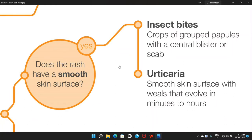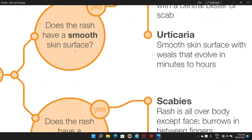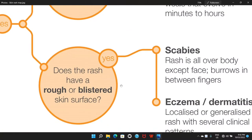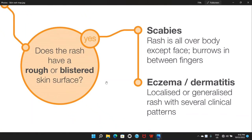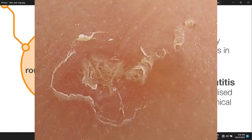Urticarial rash is very easy to diagnose. The very first question is: is it itchy? And if you look at the surface of the skin and it is very smooth, this is urticarial rash. The treatment is usually symptomatic — you can give some antihistamine medications, for example chlorpheniramine, promethazine or phenergan. Non-sedating antihistamine drugs like loratadine can also be given. Sometimes you can also give some calamine lotion to reduce the itchiness. If the rash is very itchy but the surface is rough or blistered, then you have only a few differentials.